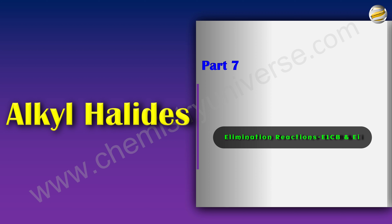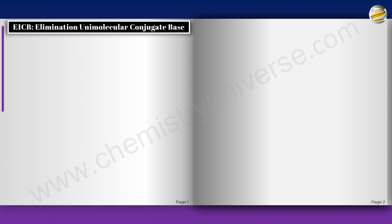So what is left in terms of what can leave first and what can leave next? The only option left is the proton would leave first and then the leaving group would leave. That is what we are going to cover in this video — two mechanisms: E1CB and EI. In E1CB, you will find the proton leaving first and then the leaving group leaving.